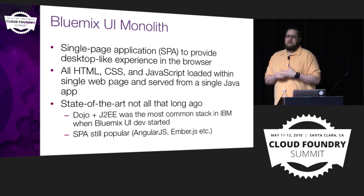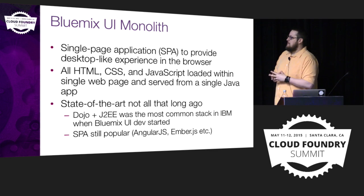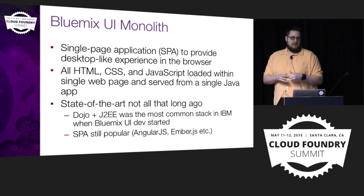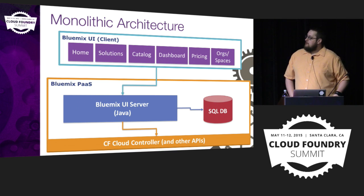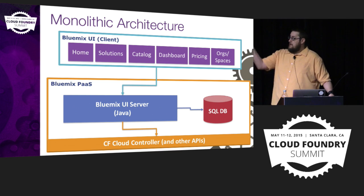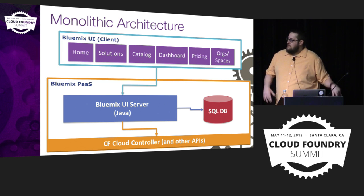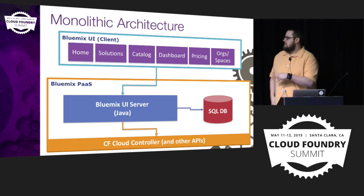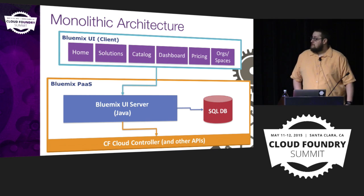This was kind of a state-of-the-art architecture when we started. Now microservices are the thing, but even with that, single-page applications are still popular — there are still frameworks like AngularJS that go down that route. Here's a picture of where we started: home, solutions, catalog running in the browser as Dojo components. The back-end Java server is connected to an SQL database service. The bottom layer is the Cloud Controller plus other APIs that our Java server calls. In many cases, calls from the client are just passed straight through to Cloud Foundry.